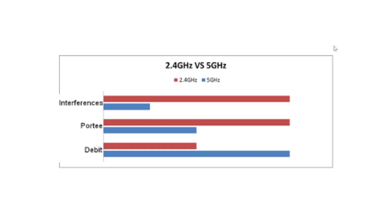That said, 2.4 isn't all that bad. One reason is that 2.4 will often give you more distance. Also, most people don't know that 2.4 and 5 gigahertz are divided into different channels, and often many devices use the same channels. You can sometimes avoid interference by choosing a different, quieter channel, which lets you avoid your neighbors' routers. Even in a crowded area, choosing a quiet channel can make your connection noticeably better.